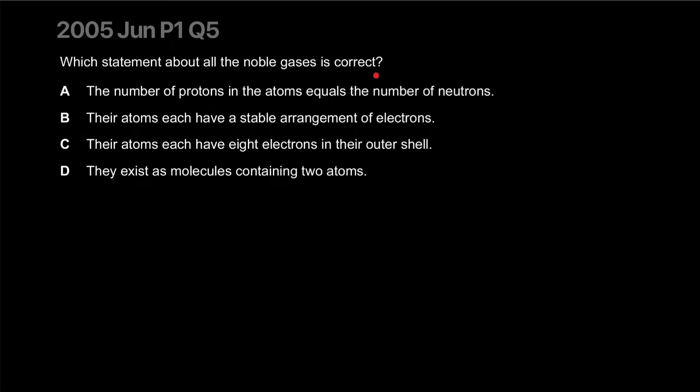Which statement about all noble gases is correct? The number of protons in the atoms equals the number of neutrons. Well, doesn't have to be. Their atoms each have a stable arrangement of electrons. Yeah, that's why they're noble gases. They're inert, they do not react.